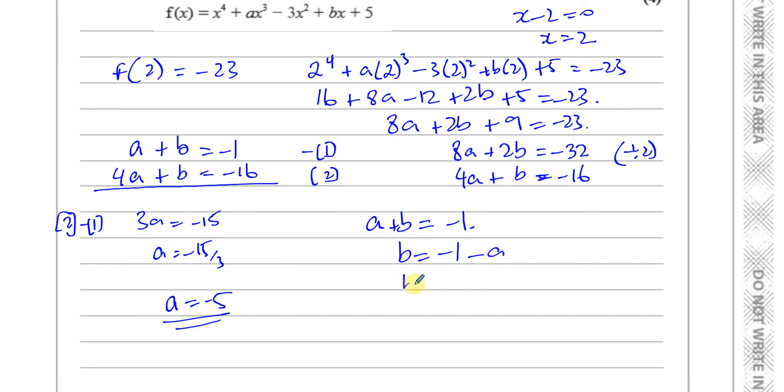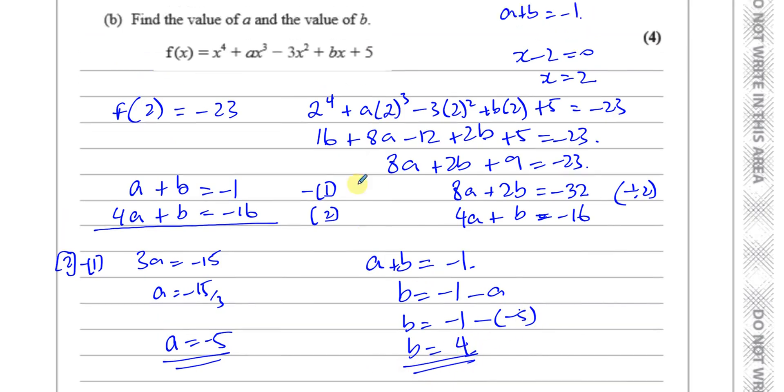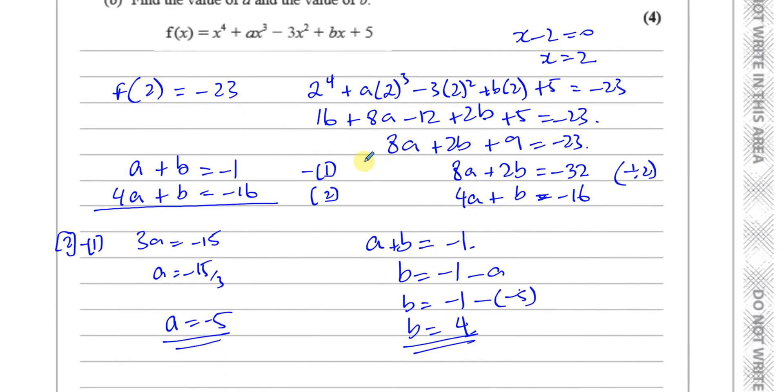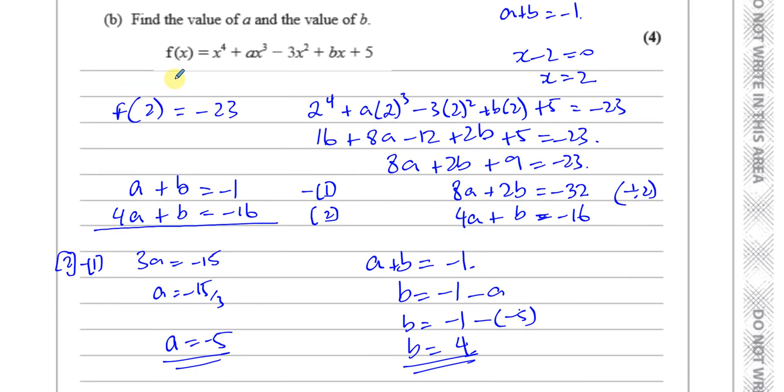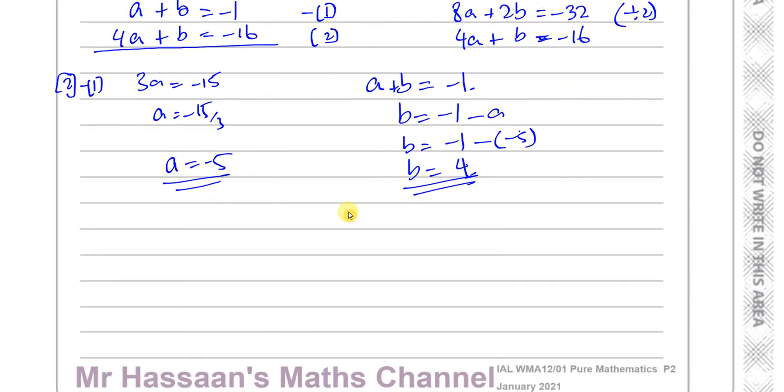And then we can find b. We know that a + b = -1, so b = -1 - a, which is -1 - (-5), which is -1 + 5, which is 4. So we have a = -5 and b = 4. What does the question tell us to do? It just tells us to find the values of a and b, and we're done.